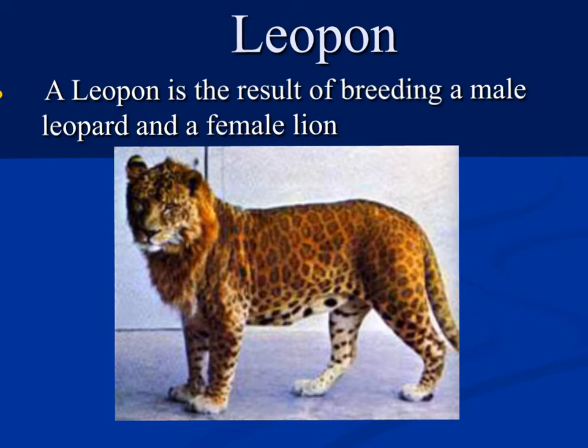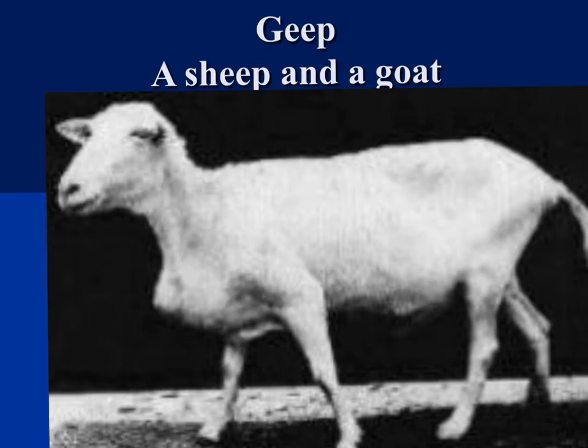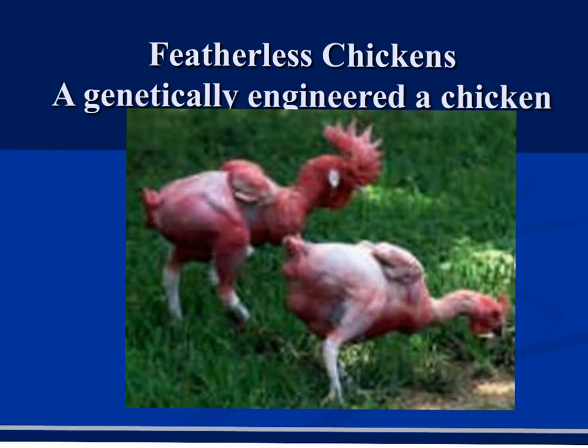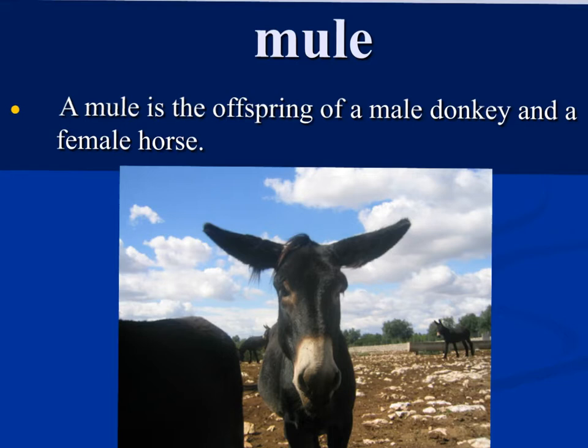Here we have a leopon, which is the result of a leopard and a lion crossed. And a different kind of 'geep' — this is a cross between a sheep and a goat. You can also genetically engineer chickens to be featherless. Again, are we doing this for God's glory or for man's glory? We could not possibly do a segment on hybrids without including the mule — the offspring between a donkey and a horse.